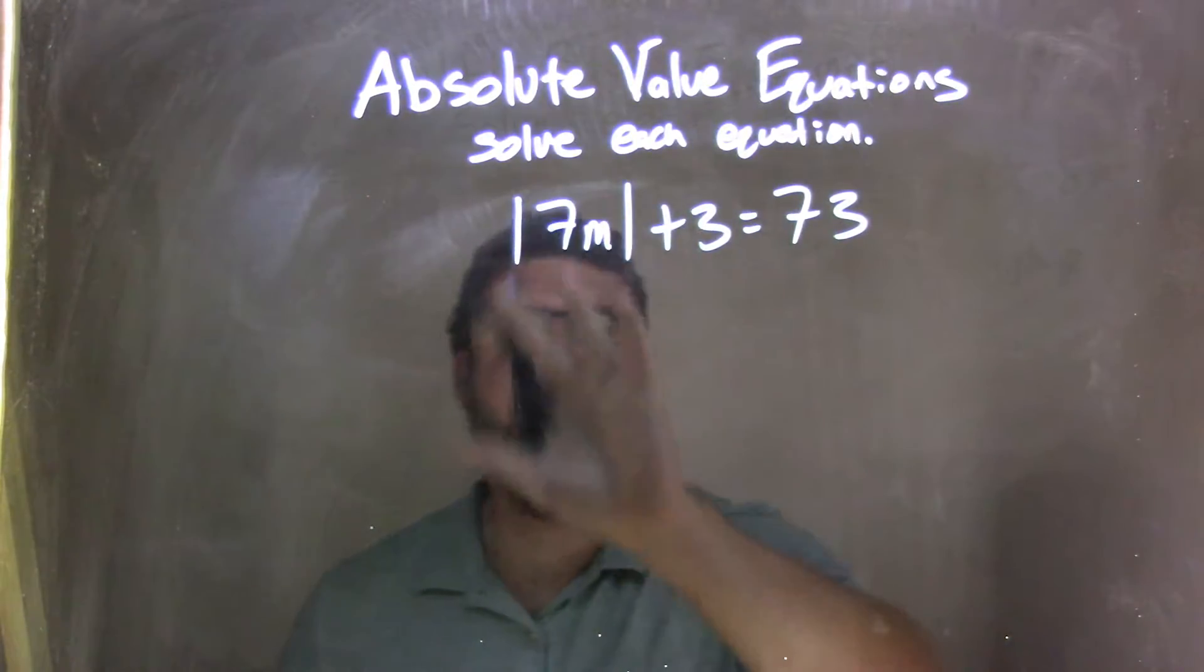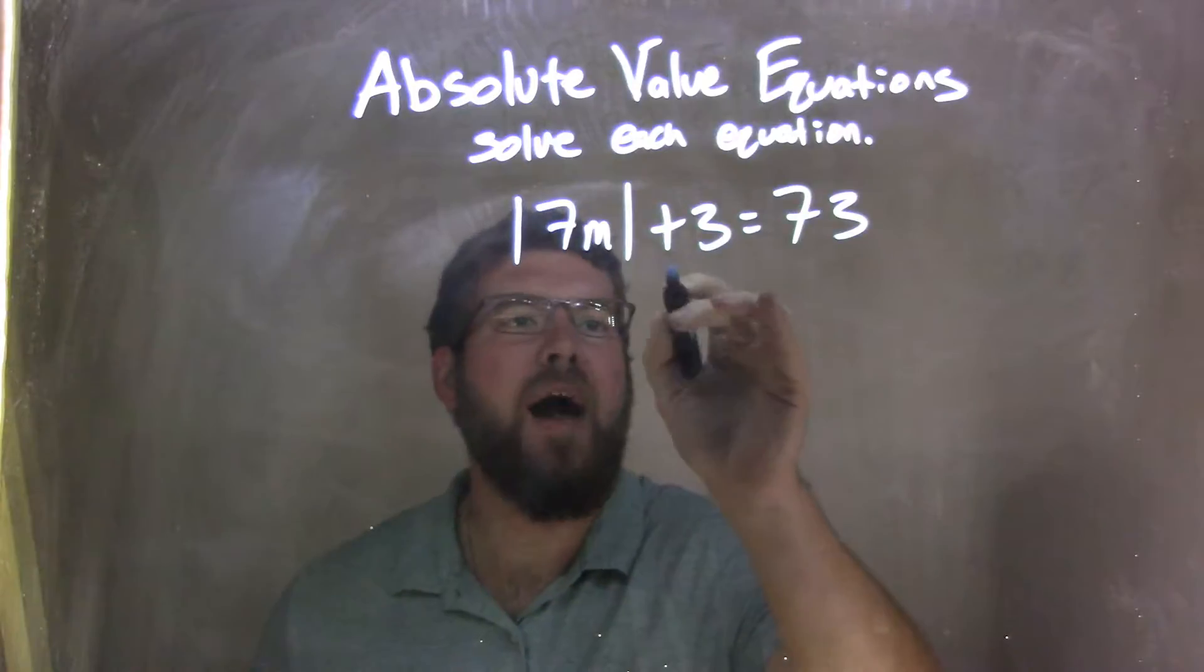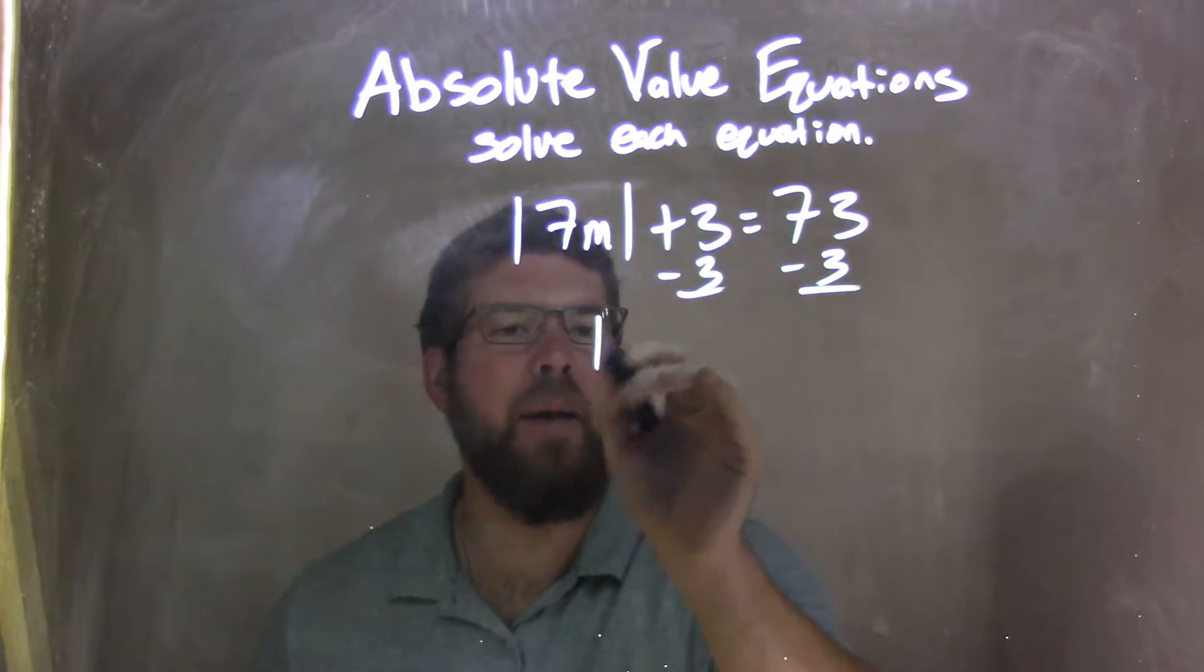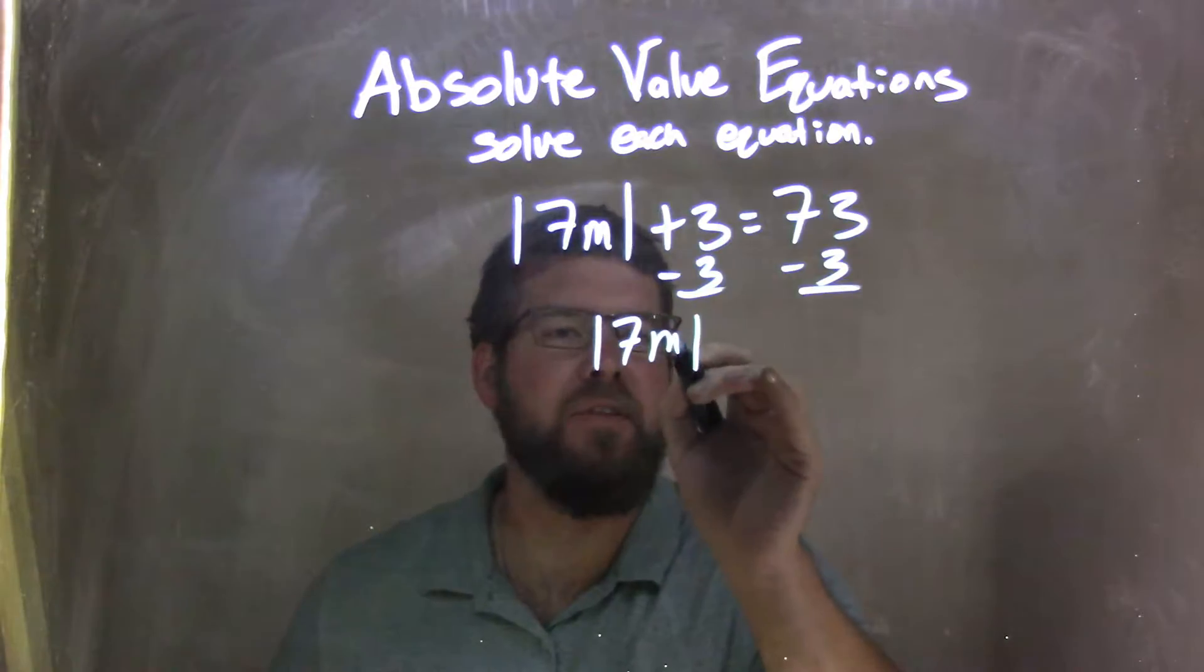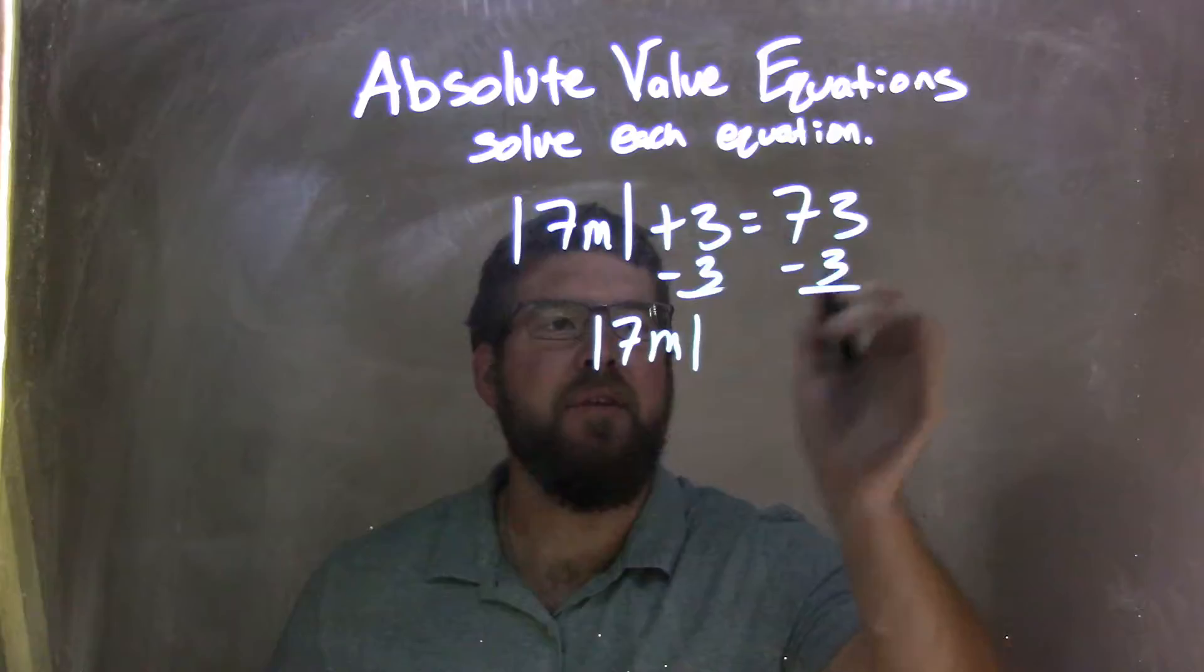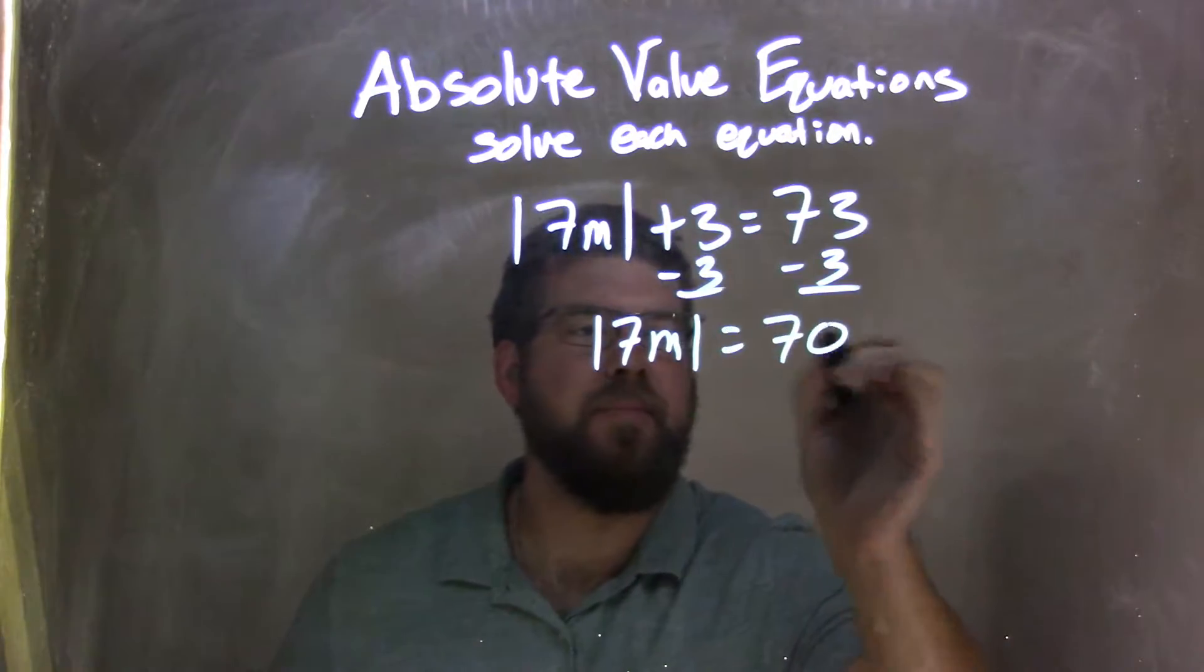Well, my first step, I need to isolate the absolute value, so I have to subtract 3 from both sides. That leaves me with the absolute value of 7m on the left isolated. Equals 73 minus 3, which is 70.